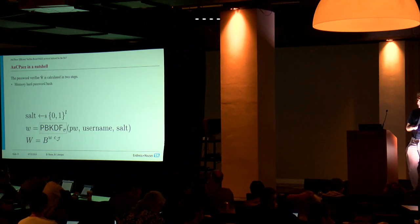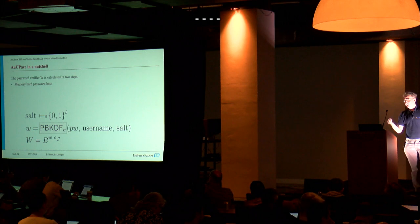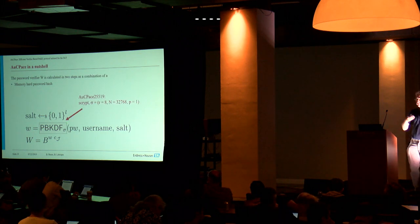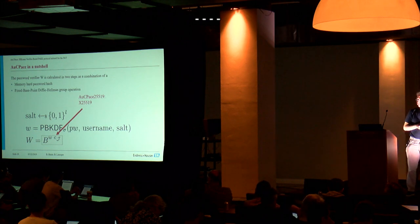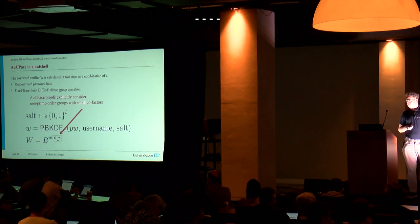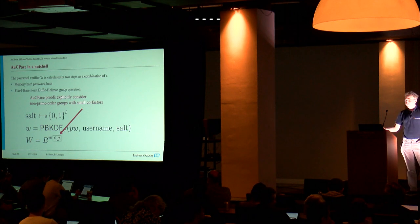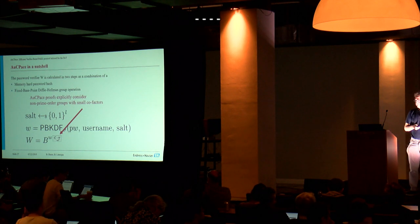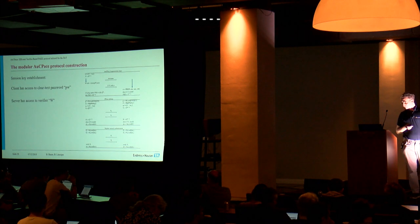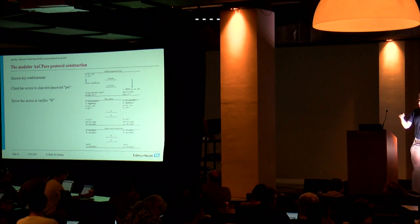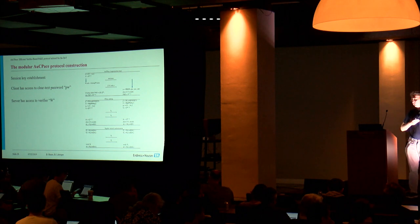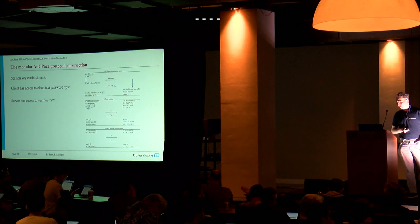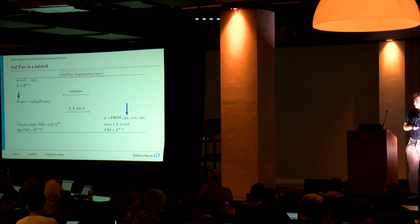When calculating the password verifier, it composes of two steps. In the first step, we have the memory hard password hash. In our reference implementation, we use scrypt for this purpose. And then we use a fixed base point Diffie-Hellman group operation. One specific feature is that we consider the complexity of non-prime order groups with small cofactors.